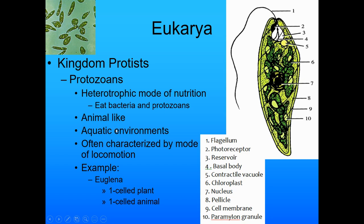Some protozoans are animal-like. Most of them live in aquatic environments and we usually characterize them by their mode of locomotion — when people first characterized them, that's what they saw. The one we're going to look at in class is euglena. Euglena has been called a one-celled plant and a one-celled animal — a one-celled plant because it contains chloroplasts and can do photosynthesis, but it also has a flagellum, this whip-like projection that allows it to move. When you look at euglena under the microscope, you actually have to chase them.